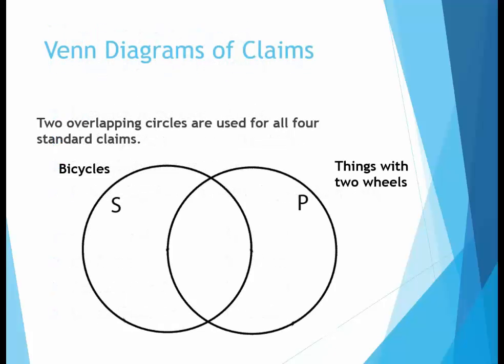Venn diagrams are a way to visualize the relationship between the subject and predicate in categorical propositions. The system uses two overlapping circles for the subject and predicate regardless of the form of the proposition. Shading and an X are used to show the relationships between the subject and predicate in claims. We'll start with a circle S representing all bicycles and a circle P representing things with two wheels.